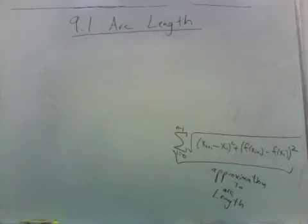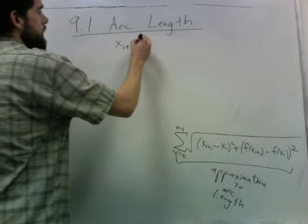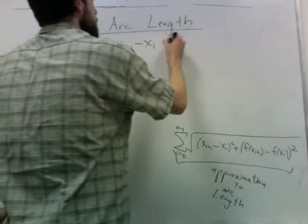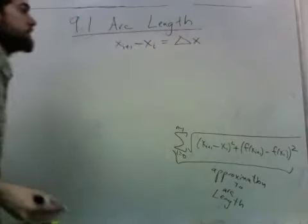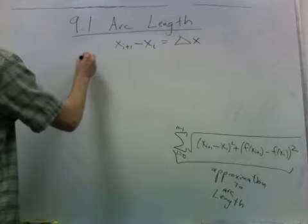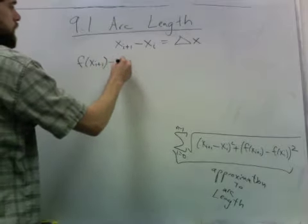Well, it turns out this approximation can be actually written as a Riemann sum. And what I mean by that is xi plus 1 minus xi is just delta x if we've done an even subdivision. And I have to do a little more work with this piece.